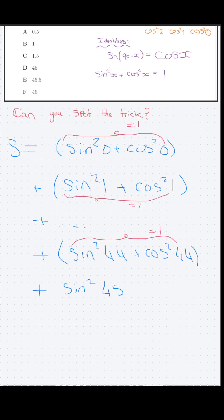So, our sum we can write as 1 plus 1 plus dot dot plus 1, 44 times, plus sine squared 45.